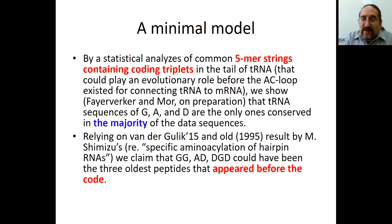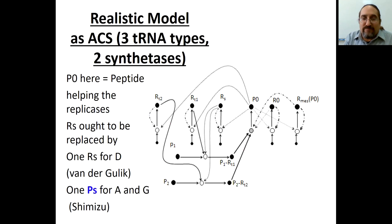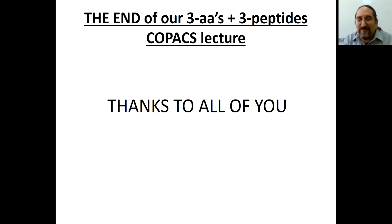Using only these three amino acids and only three peptides — GG, AD, and DGD — based on van der Gullik's work and an old result by Shimizu, we could claim that translation could rely on just these three peptides.